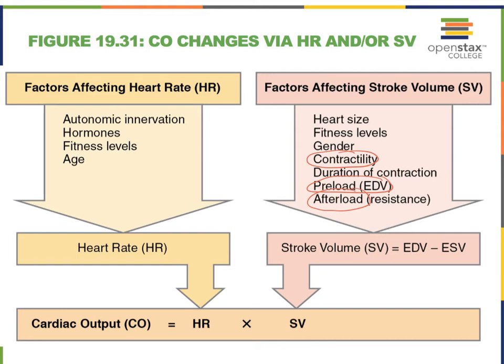The main factors that impact stroke volume include preload, which impacts EDV especially; contractility; and afterload, which refers to how much pressure our ventricles must develop to overcome the pressure in the aorta and pulmonary trunk. When it comes to heart rate, we primarily focused on the autonomic innervation.